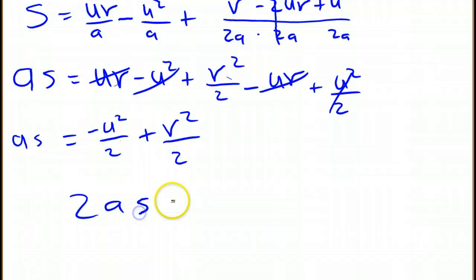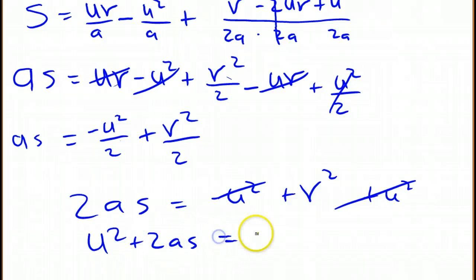So then we have 2as equals minus u squared plus v squared. And then we'll go ahead and add the u squared to both sides. We'll get rid of this, and that will give us u squared plus 2as equals v squared.